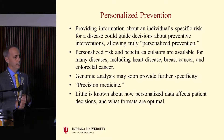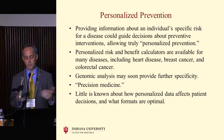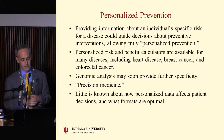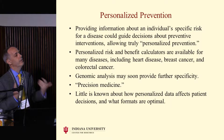I do not make any money from this work except for my salary and occasional trips. So: debating the value of comparative risk. Providing information about an individual's specific risk for a disease could guide decisions about prevention, allowing truly personalized prevention. Personalized risk and benefit calculators are available for many diseases, including heart disease, breast cancer, and colorectal cancer. Genomic analysis is coming and will provide more specificity, and there'll be precision medicine. But little is known about how to give this kind of data to patients and when to do it.